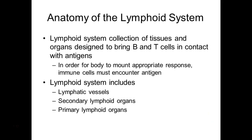To review from last time: we talked about lymphatic vessels and how the extra fluid that ends up in your tissues during inflammation gets filtered and then dumps back into your subclavian veins. Along the way, the organs that filter that lymph are named after lymph — they're called lymph nodes.